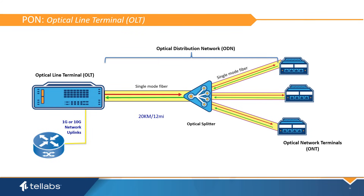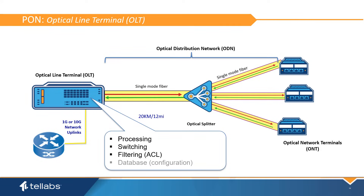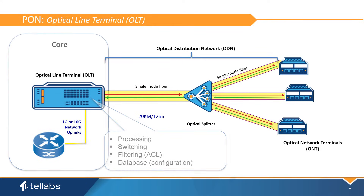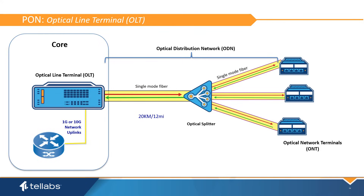The Optical Line Terminal, or OLT, acts as the central aggregation element. It performs all processing, switching, filtering, and database storage. The OLT is located in the core data center and replaces multiple Layer 2 switches. The OLT provides multiple PON interfaces to accommodate the specific needs of the enterprise and is expandable to meet future needs.